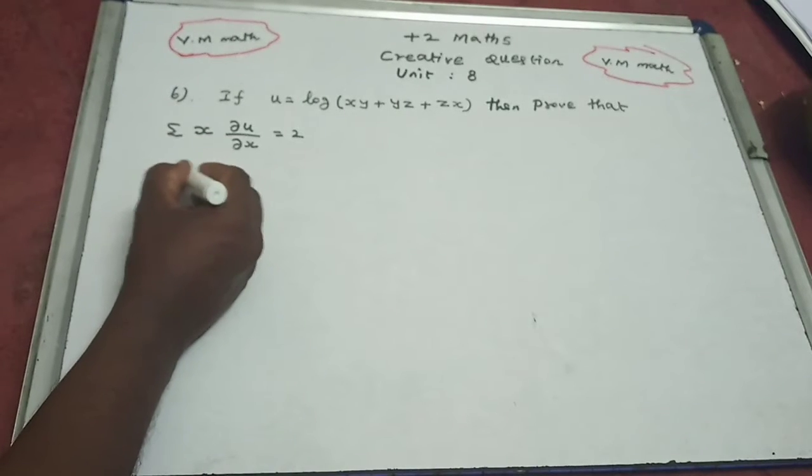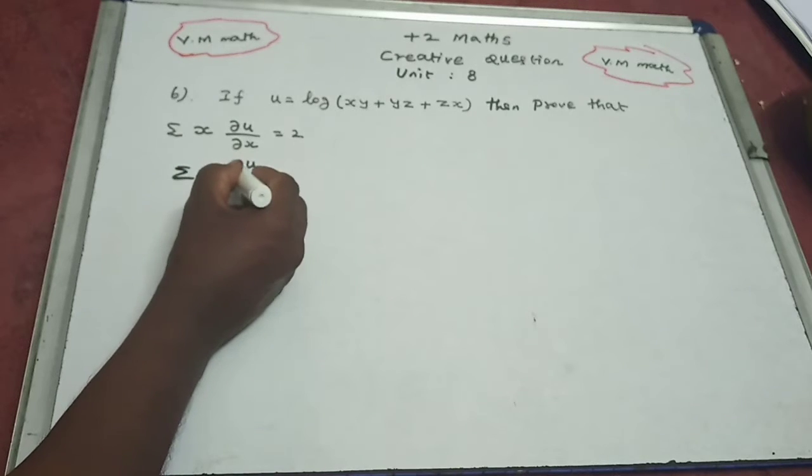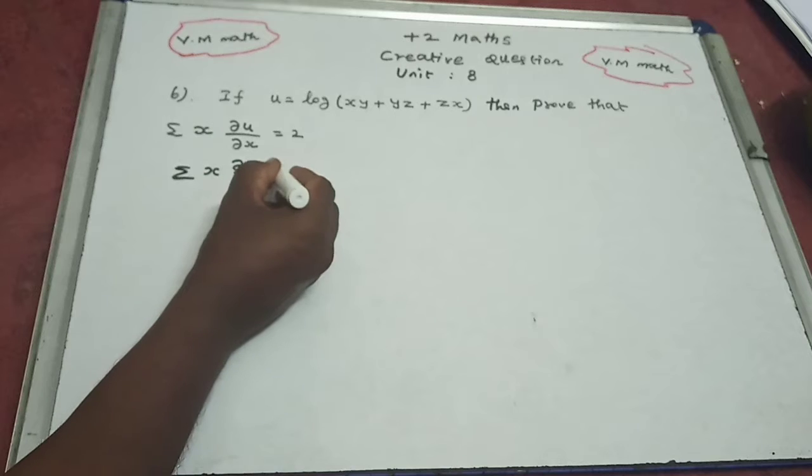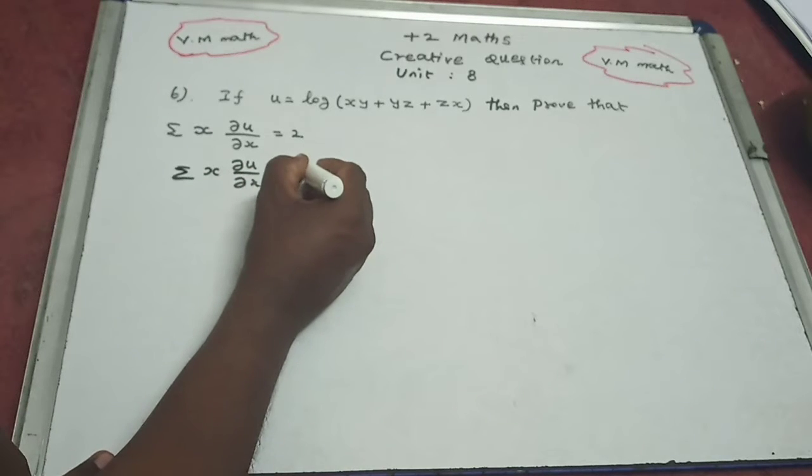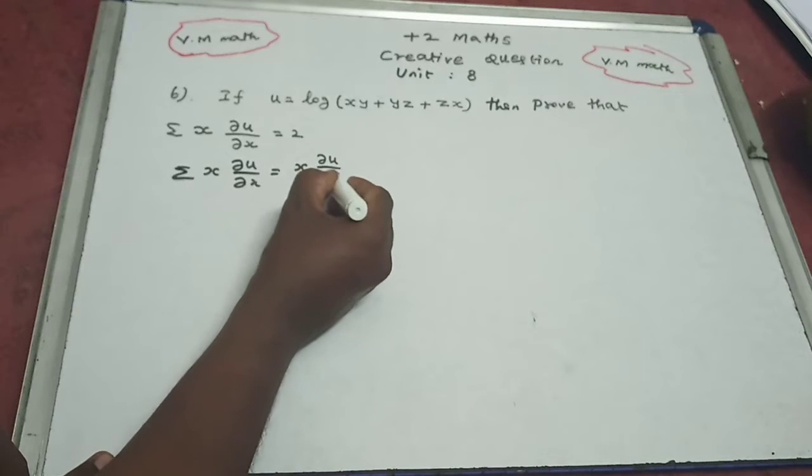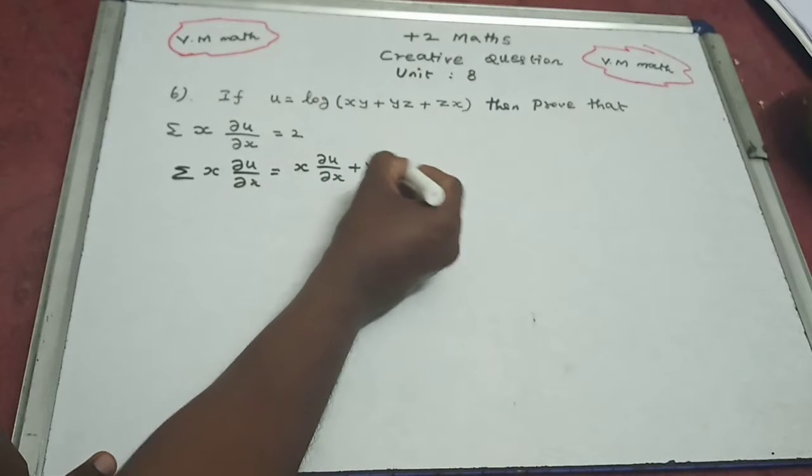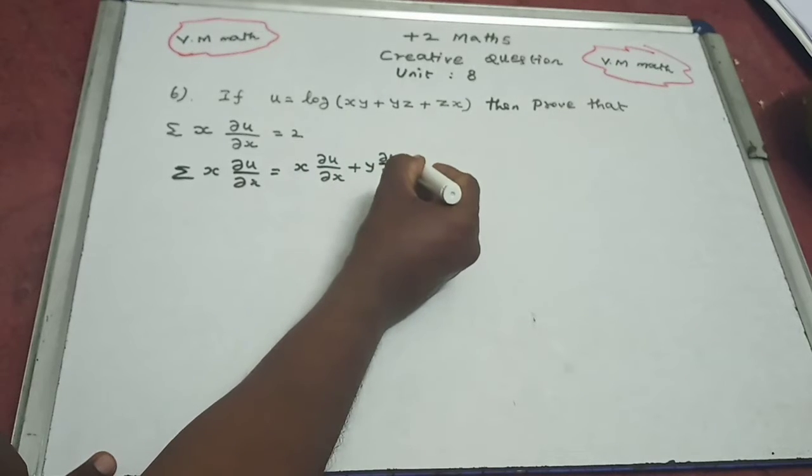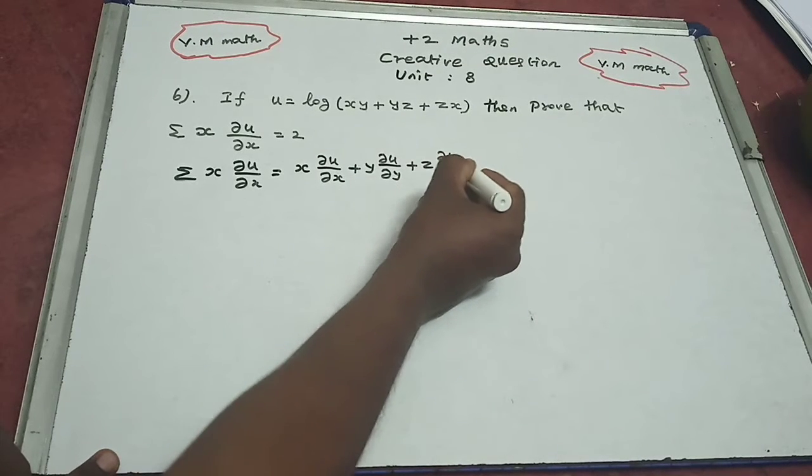So we have x into ∂u/∂x, summation of x into ∂u/∂x. Next, y into ∂u/∂y plus z into ∂u/∂z.